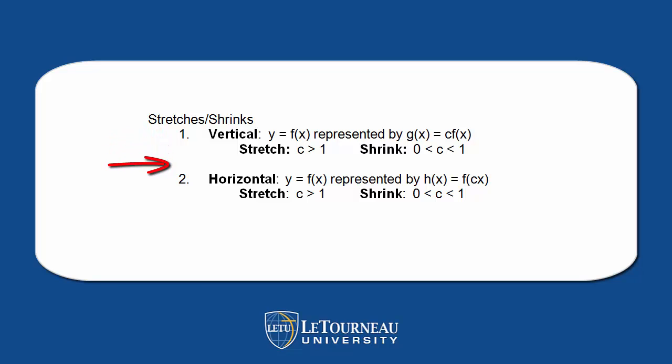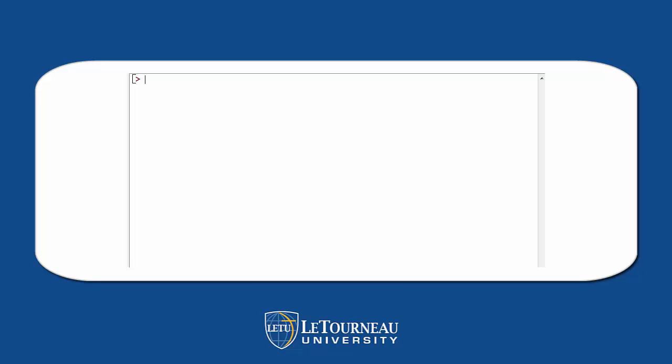Now let's look at horizontal. In horizontal, you multiply the x by a constant c, then substitute it into the function. Let's check out graphing some of these — there will be some little arrows to show us so you can look at it.